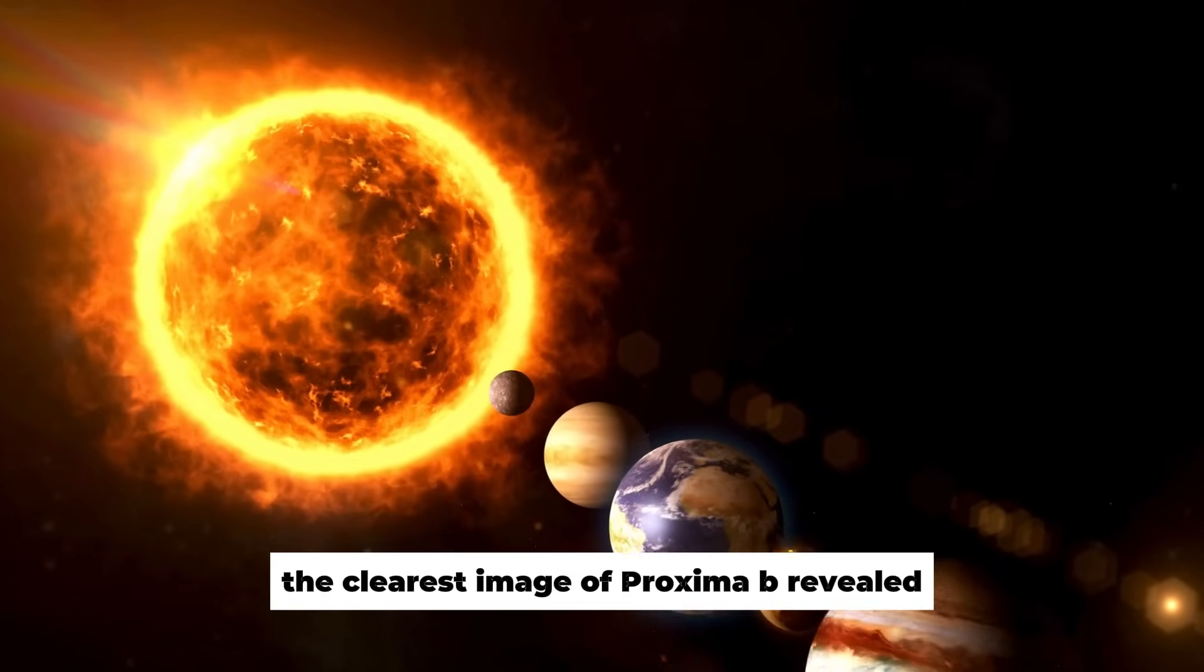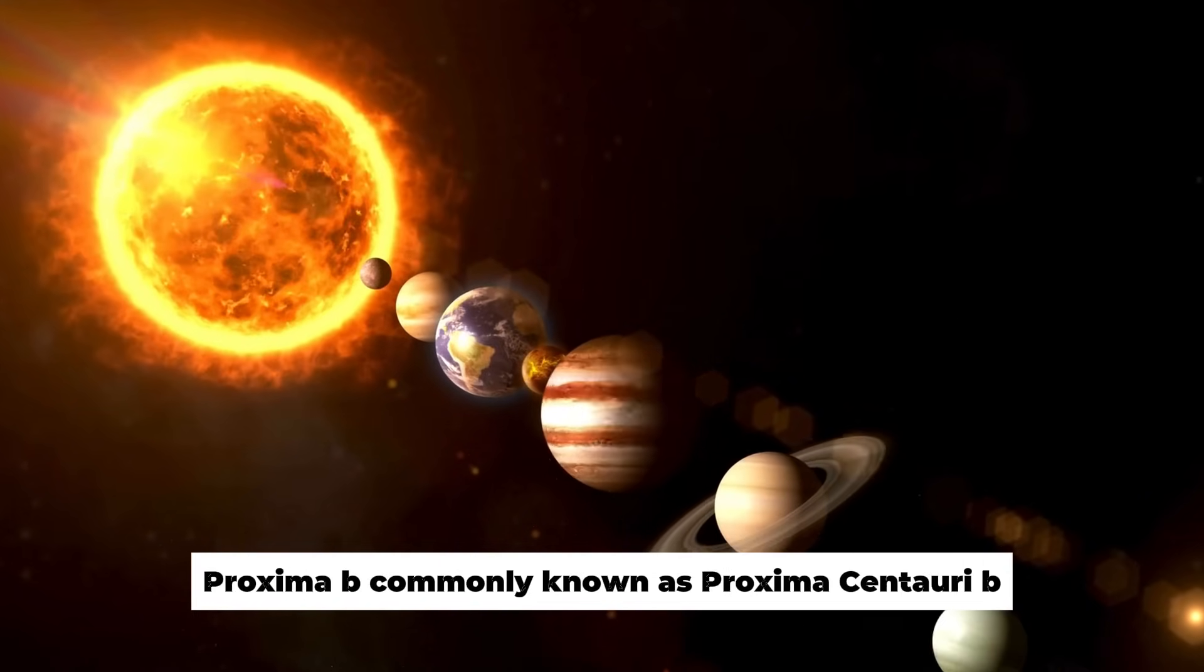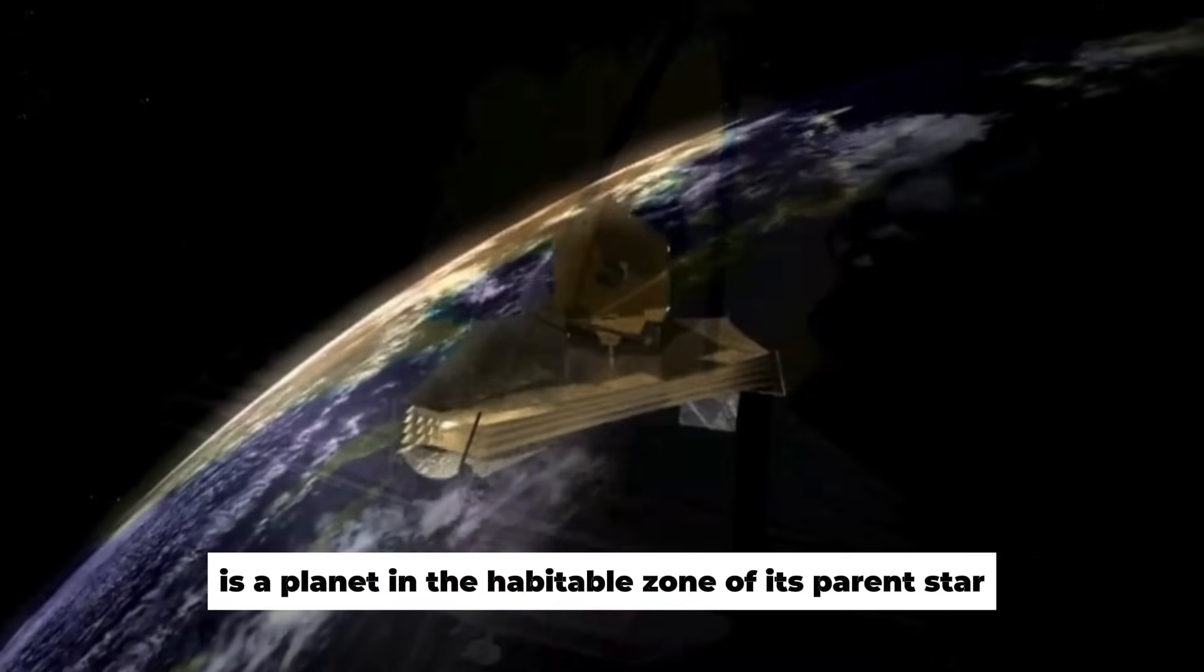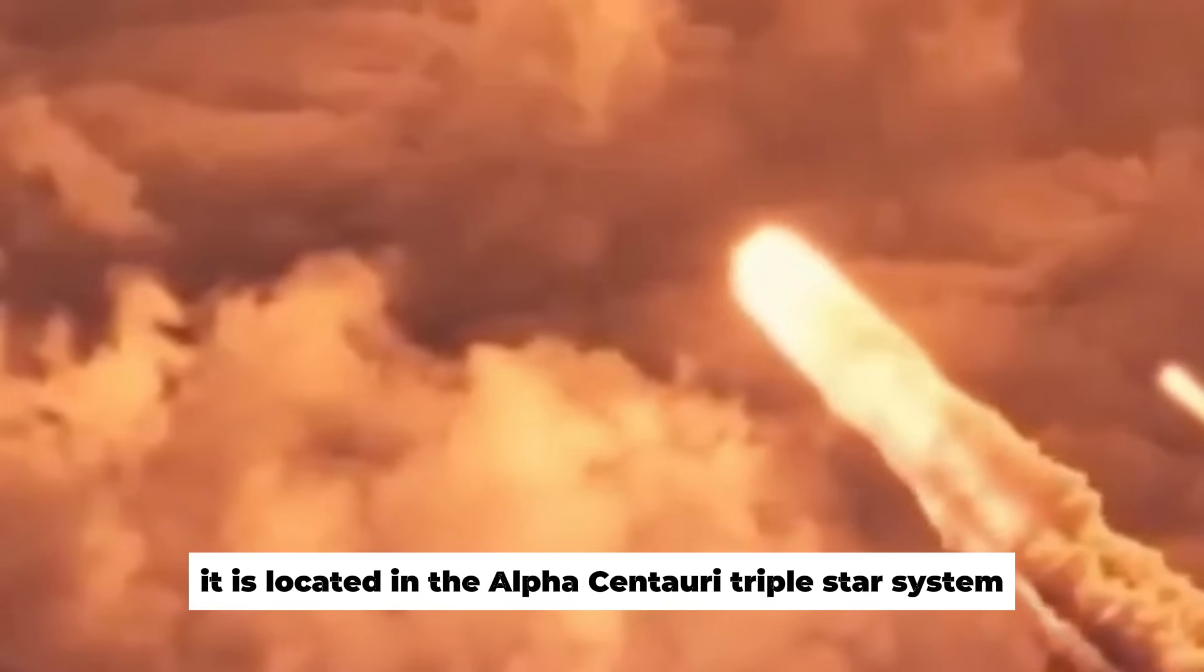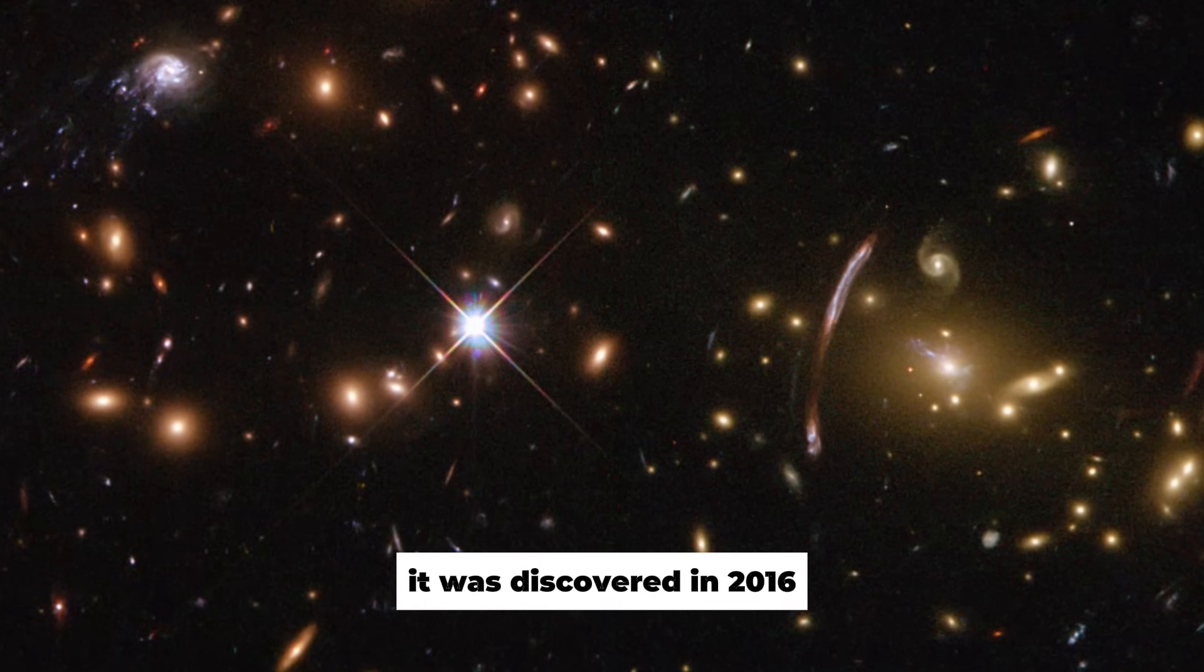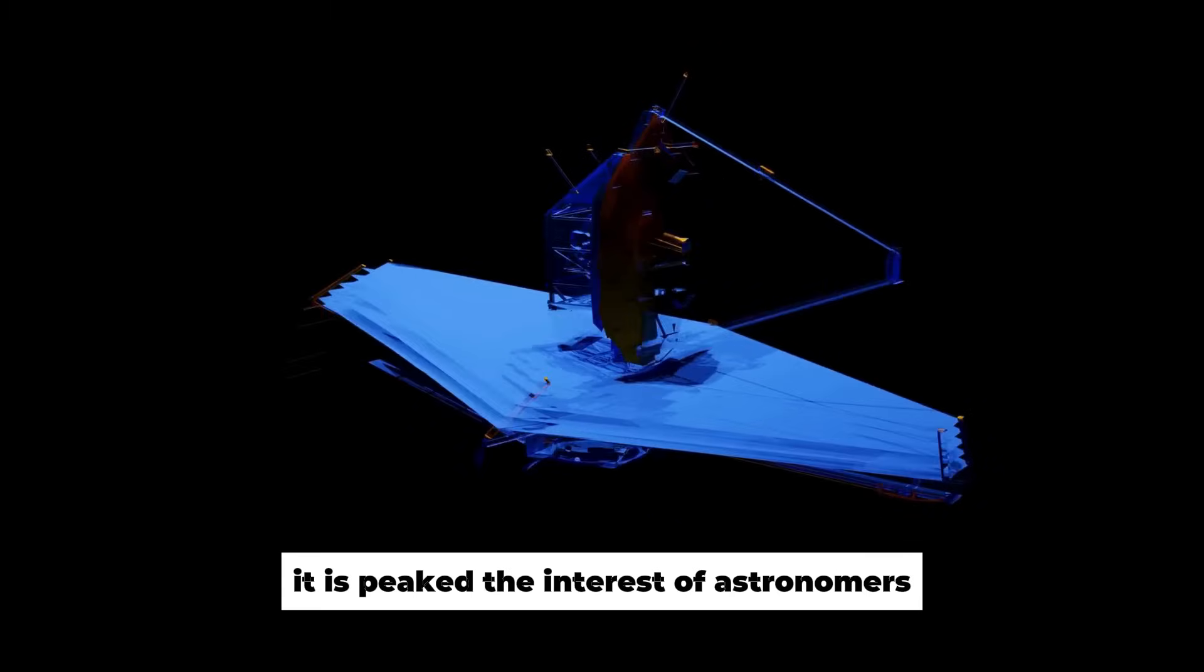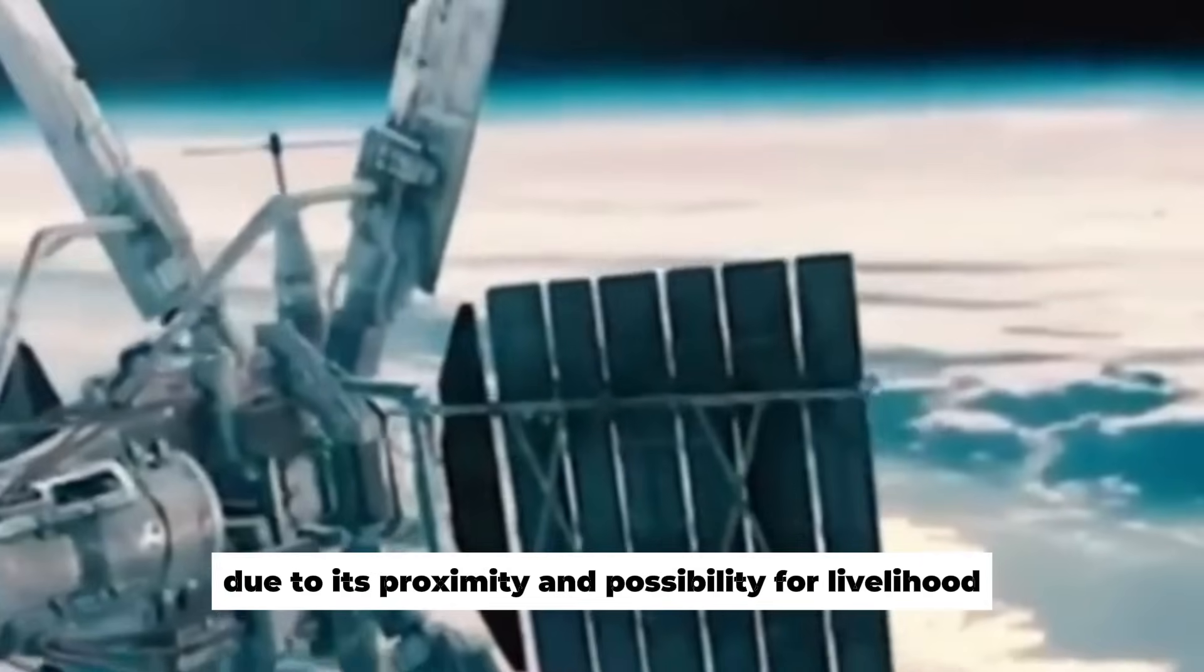The clearest image of Proxima b revealed Proxima b, commonly known as Proxima Centauri b, is a planet in the habitable zone of its parent star, Proxima Centauri. It is located in the Alpha Centauri triple star system, which is the closest star system to our own. It was discovered in 2016, and since then it has piqued the interest of astronomers due to its proximity and possibility for livelihood.